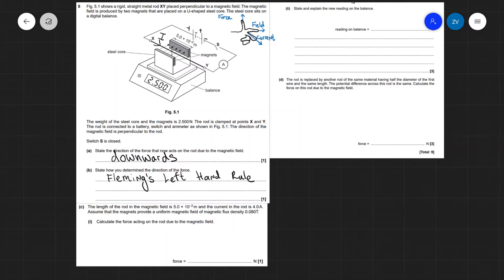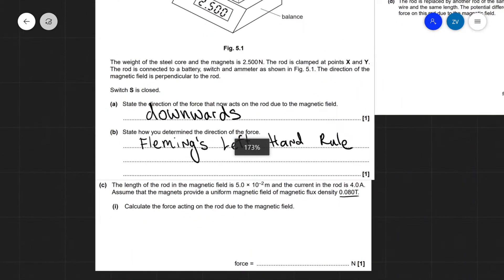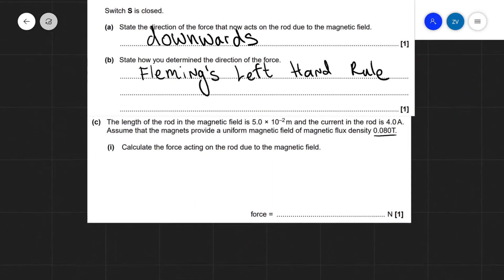So for the next one, the length of the rod in the magnetic field is five centimeters and the current in the rod is four amps. Assume the magnet provides a uniform magnetic field and we have the flux density being 0.08 teslas. Calculate the force acting on the rod due to the magnetic field. Well, this is a classic question for F = BIL sin θ.